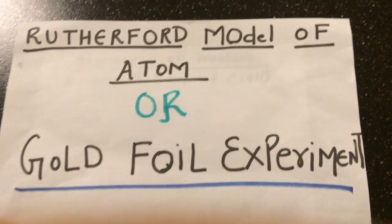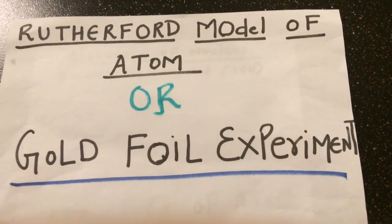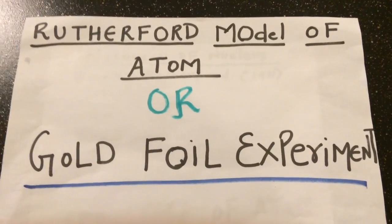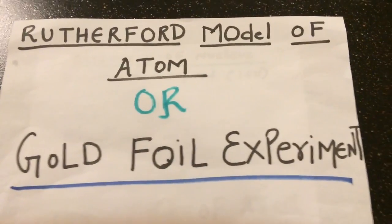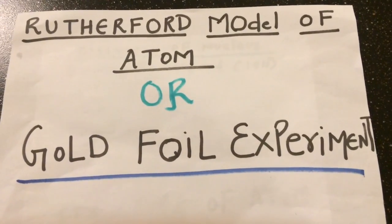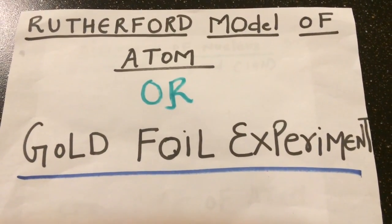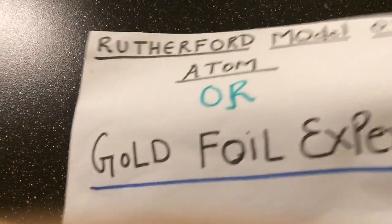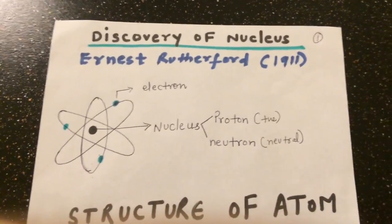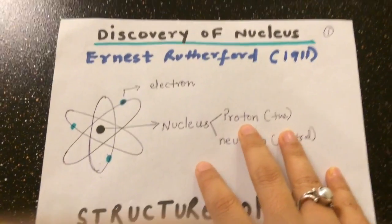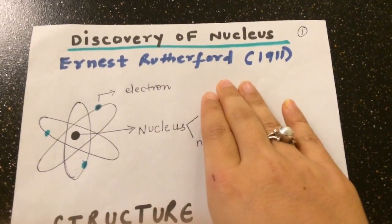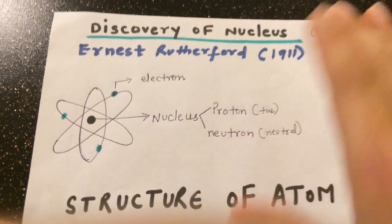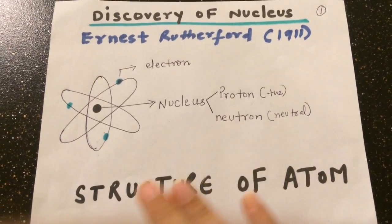Hi friends, today I'm going to explain the Rutherford model of the atom, which is also called the Rutherford scattering experiment. This experiment is very important in chemistry because it led to the discovery of the nucleus. It was done by Ernest Rutherford with his co-workers in 1911.